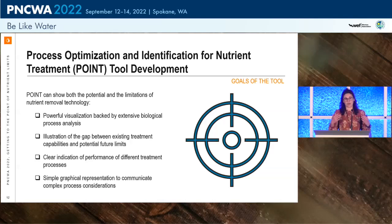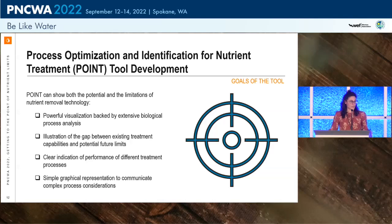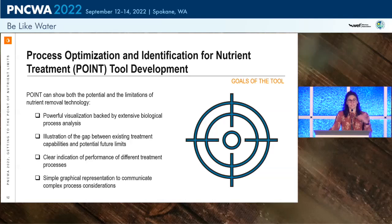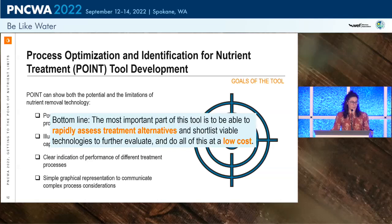The tool provides our clients with a simple visualization and graphical representation of what it takes to get down to those limits. This can help utilities communicate to regulators — for example, showing that getting from 20 milligrams per liter down to five milligrams per liter requires significant capital and O&M investment. The benefit of the Point tool is to provide a rapid assessment of different treatment technologies, shortlist viable options, and do all of this at a very low cost.